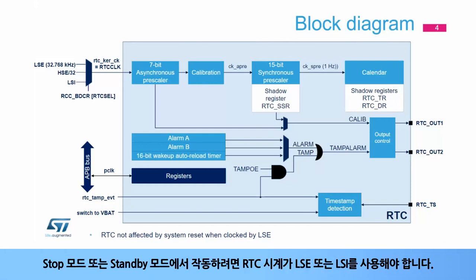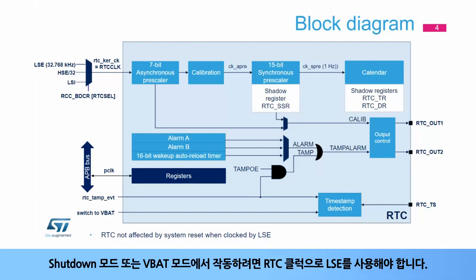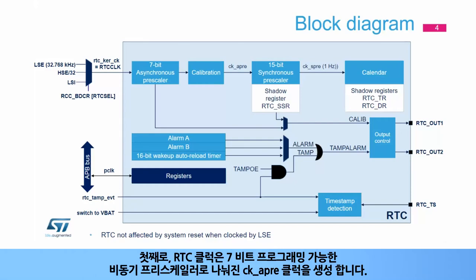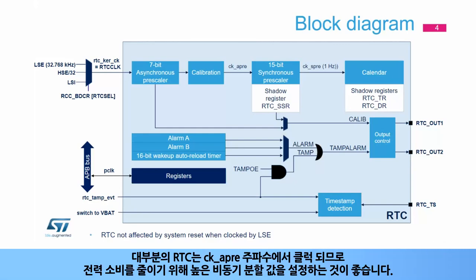To be functional in stop or standby mode, the RTC clock must use the LSE or LSI. To be functional in shutdown or VBAT mode, the RTC clock must use the LSE. The RTC clock is first divided by a 7-bit programmable asynchronous pre-scaler, which provides the CKA pre-clock. Most of the RTC is clocked at the CKA pre-frequency, so in order to reduce power consumption, it is recommended to set a high asynchronous division value.